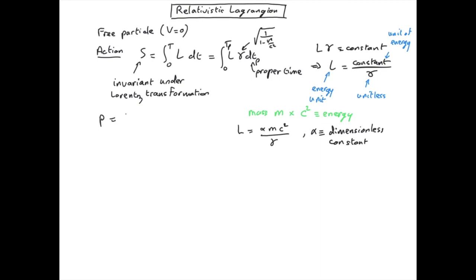And we will take a non-relativistic limit, that is when the velocity is much smaller compared to the speed of light. And then we will be able to fix the constant alpha by comparing with the momentum for a non-relativistic particle.